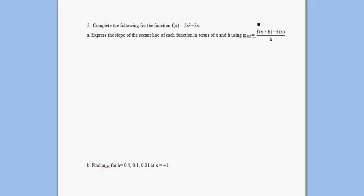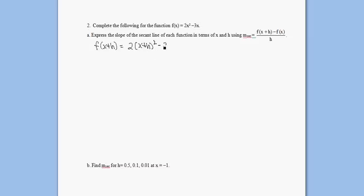Here's another example using the difference quotient to find the slope of any secant line that goes through this function. Let's jump right into it. Our f of x plus h — wherever I see x, I put x plus h. So therefore this would be 2 times x plus h squared minus 3 times x plus h.